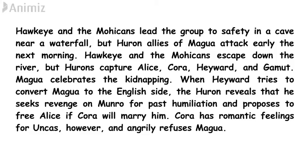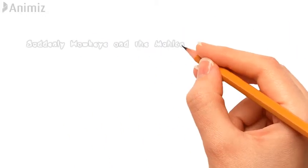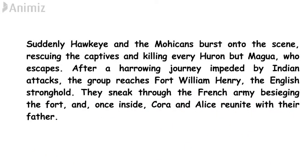Magwa celebrates the kidnapping, and here we also learn the main reason behind his hatred. When Hayward tries to convert Magwa to the English side, Magwa reveals he seeks revenge against Munro for past humiliation, and proposes to free Alice if Cora will marry him. This was unacceptable to Cora, who had romantic feelings for Uncas. Meanwhile, Hawkeye and the Mohicans burst onto the scene and release the captives, killing every Huron except Magwa, who escapes again.